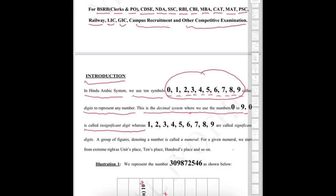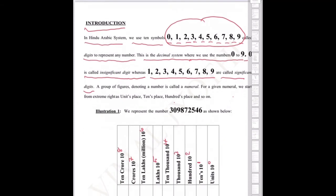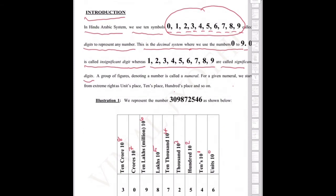Whereas 1, 2, 3, 4, 5, 6, 7, 8, 9 are called significant digits. A group of figures denoting a number is called a numeral. For a given numeral, we start from the extreme right as the units place, tens place, hundreds place, and so on.